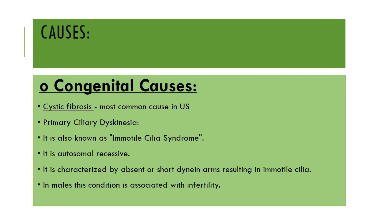The congenital causes of bronchiectasis include cystic fibrosis, primary ciliary dyskinesia, and Kartagener syndrome. Cystic fibrosis is the most common cause in the United States. Primary ciliary dyskinesia is also known as immotile cilia syndrome and it is an autosomal recessive condition characterized by absent or short dynein arms, resulting in immotile cilia. In males, this condition leads to infertility because of the absence of the sperm tail.